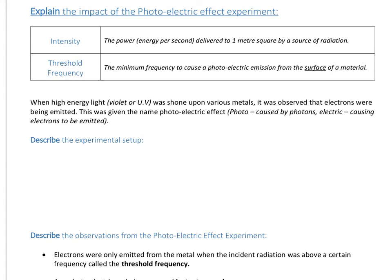Some quick definitions first of all. I'm going to talk about the intensity of a source of radiation or light - that is the amount of energy that the radiation is delivering per second to a metre squared. And I'm going to talk about something called a threshold frequency, which is defined as the minimum frequency to cause a photoelectric emission from the surface of a material. It's important that you include that second part - the fact that it's from the surface.